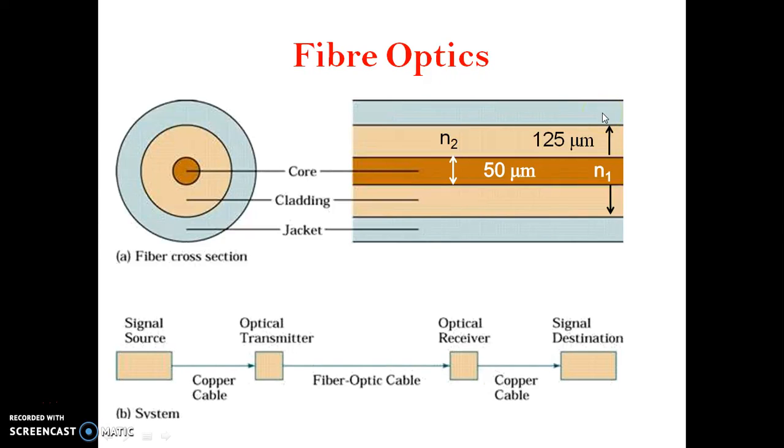The diameter of the core varies from 5 to 100 micrometers. Diameter of cladding is 125 micrometers, and the jacket adds another 100 micrometers to the diameter of the fiber. The core is denser than the cladding.